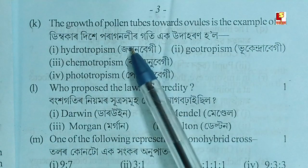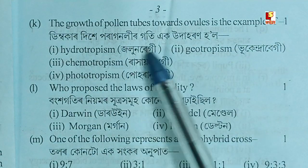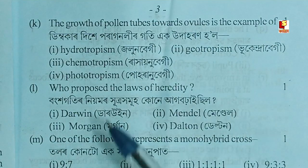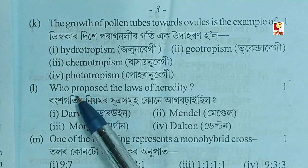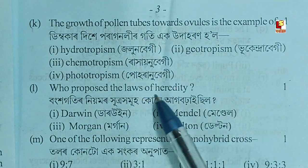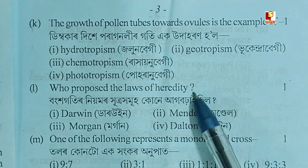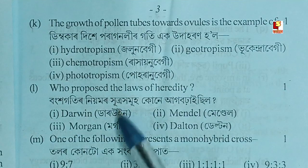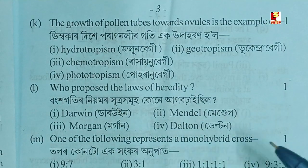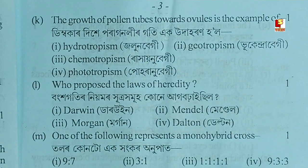Who proposed the law of heredity? Options are: Darwin, Mendel, Morgan, Dalton.